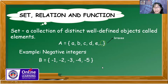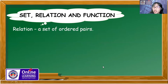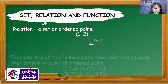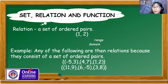How about the relation? A relation is a set of ordered pairs, where the first component is called the domain and the second component is called the range. The following set of ordered pairs is an example of a relation, since it consists of ordered pairs.